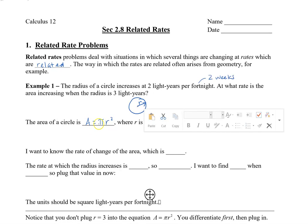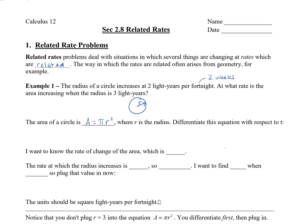We want to differentiate this equation with respect to T, because everything is related to time. If A is related to time, we take the derivative of A with respect to time. That equals pi times the derivative of R squared, which is 2R — so we write this as 2 times pi times R, and since the radius is also changing with respect to time, we multiply by dR/dt.